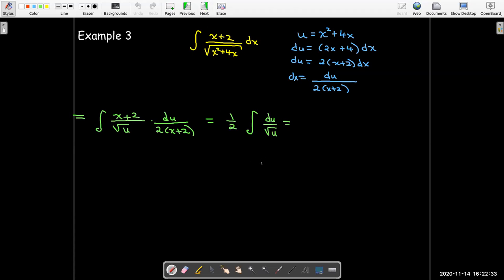Go ahead and find my antiderivative. I'll add 1 to negative 1 half. That gives me positive 1 half. I would have to divide by 1 half. But dividing by 1 half is the same as multiplying by 2. I still have that original 1 half. So 1 half of 2 will be 1. And of course, I have to replace the u with my original variable, which was x squared plus 4x. So my final antiderivative is x squared plus 4x raised to the power of 1 half. And of course, I need to keep my plus c.